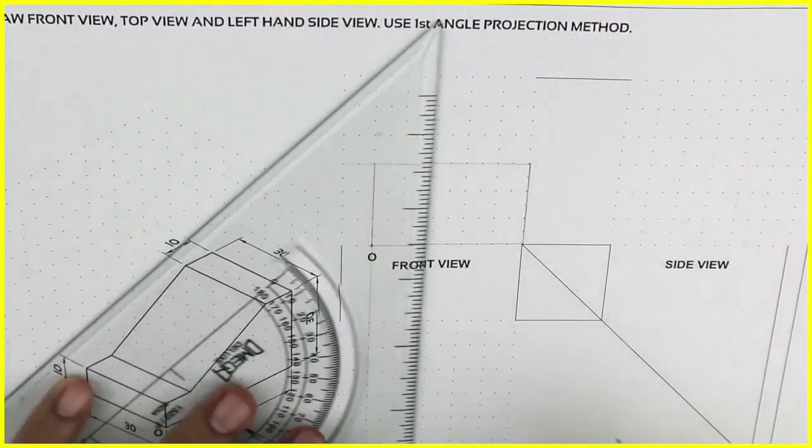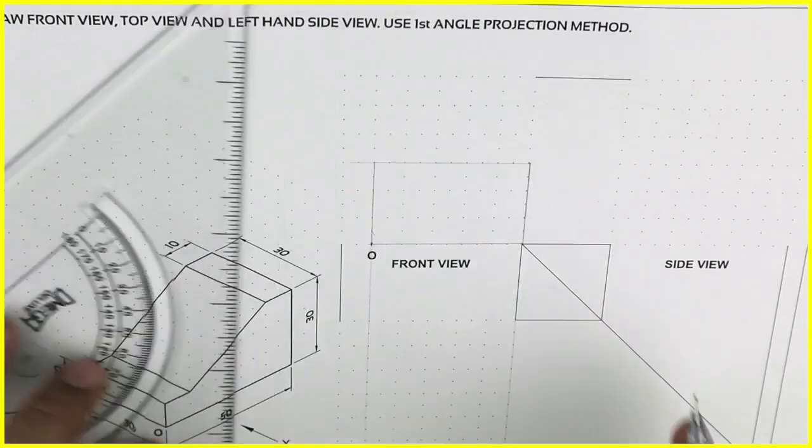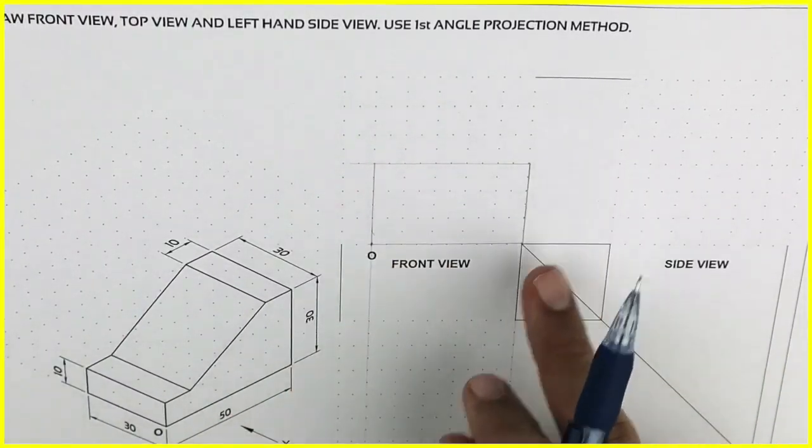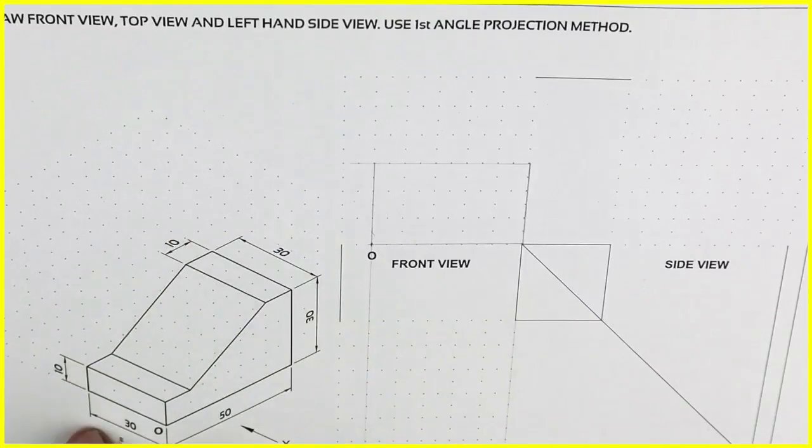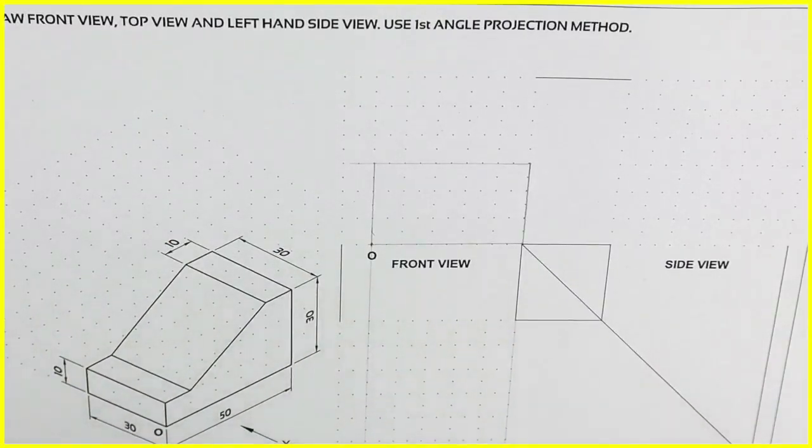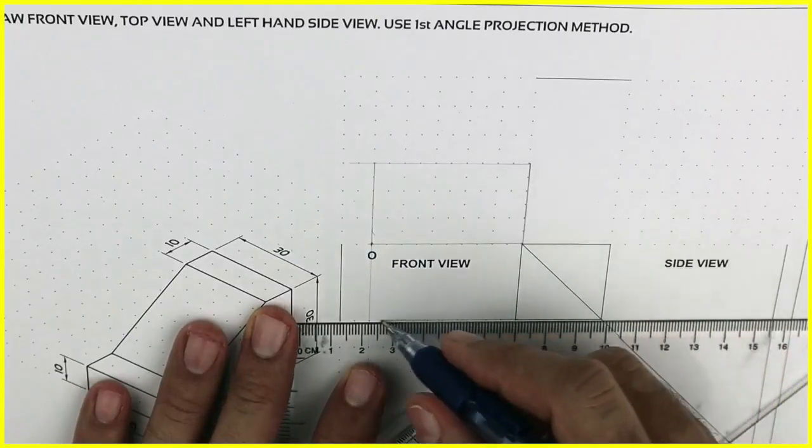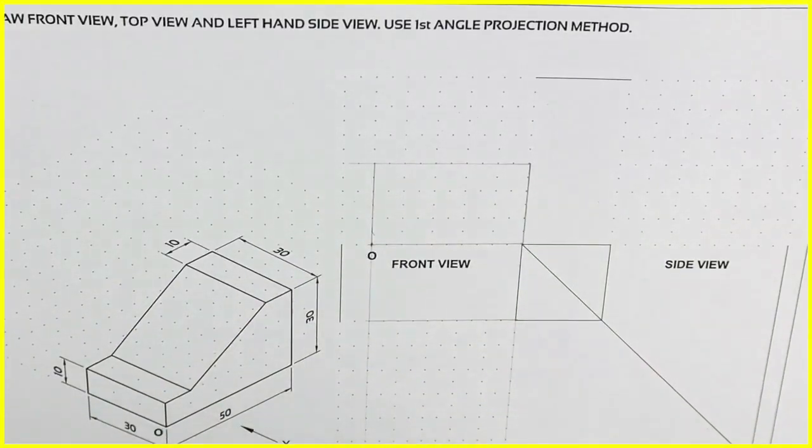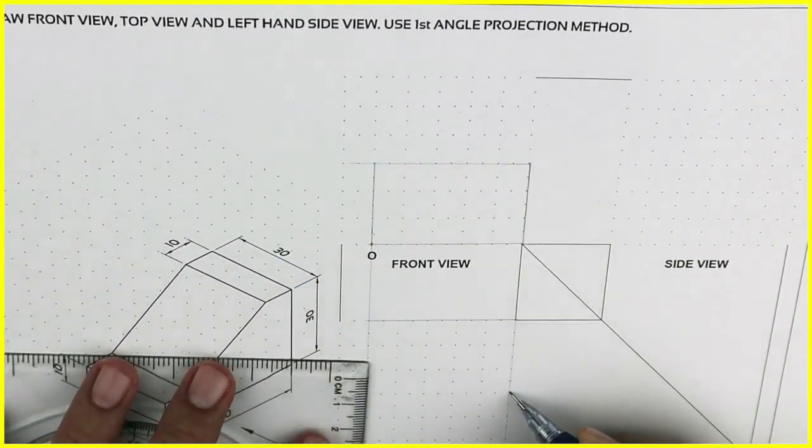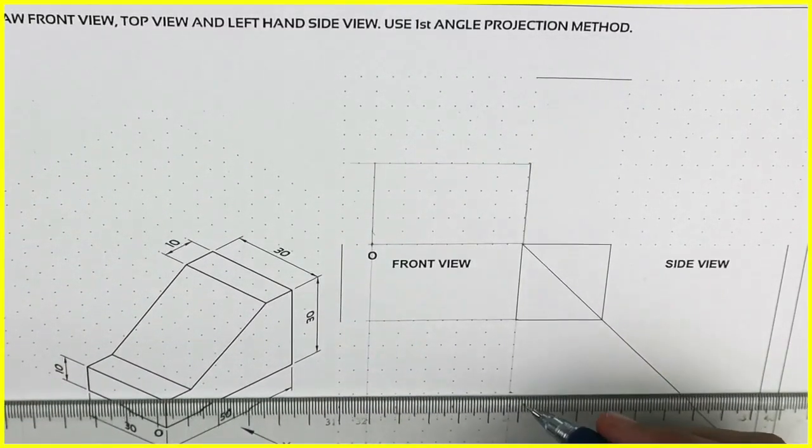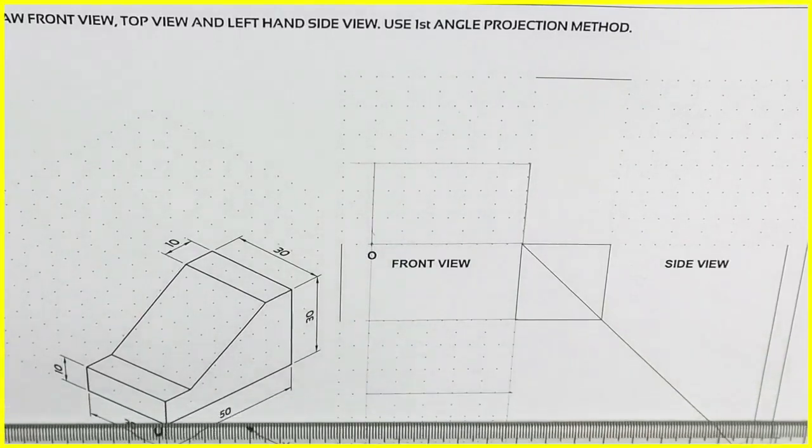Then we leave 20. And we will draw box for top view. Now if you see how much is width? 30. Length is 50. So we'll mark 50, which is length. In top view we'll see length and width. How much it is? 30. Width is 30. So we'll take that much. And we will draw very light box.